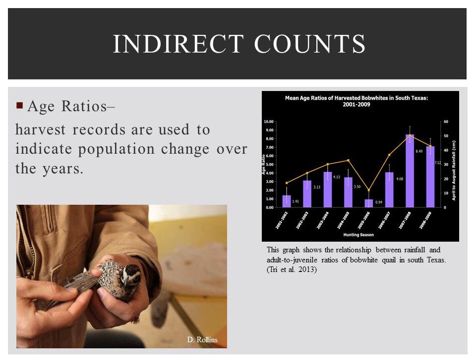Age ratios. The increase in the annual quail population from reproduction is an indicator of management success and the influence of other environmental factors. Keeping stringent harvest records can give you an indication of population change over the years. The ratio of adult to juvenile quail in the hunter's bag is a measure of productivity and survival since the breeding season. More productive breeding seasons, including cooler, wetter summers, yield a higher percentage of juveniles in the bag.